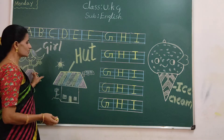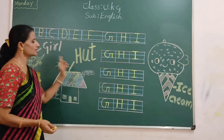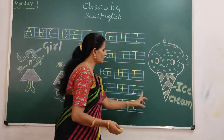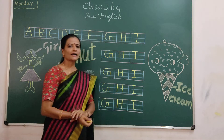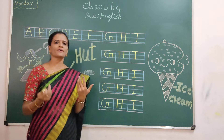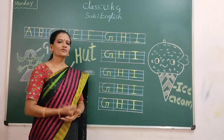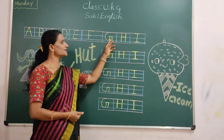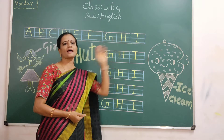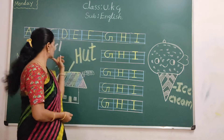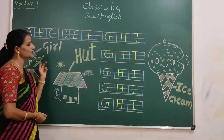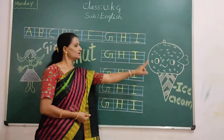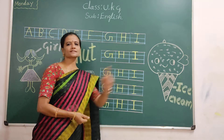G for girl. H for heart. I for ice cream. Say everyone — what did we learn today? Which letters did we learn? G, H, and I. G for girl. H for heart. I for ice cream.